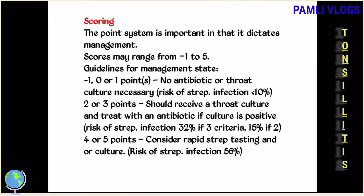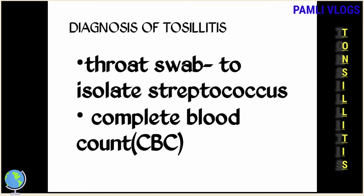Centor scores range from negative one to five. Guidelines state: negative one, zero, or one point — no antibiotic or throat culture necessary, risk of strep infection is less than 10 percent. Two or three points — should receive a throat culture and treat with antibiotics if culture is positive; risk is 32 percent for three criteria, 15 percent for two. Four or five points — consider rapid strep testing and culture; risk of strep infection is 56 percent. The lab will perform a throat swab to isolate Streptococcus.